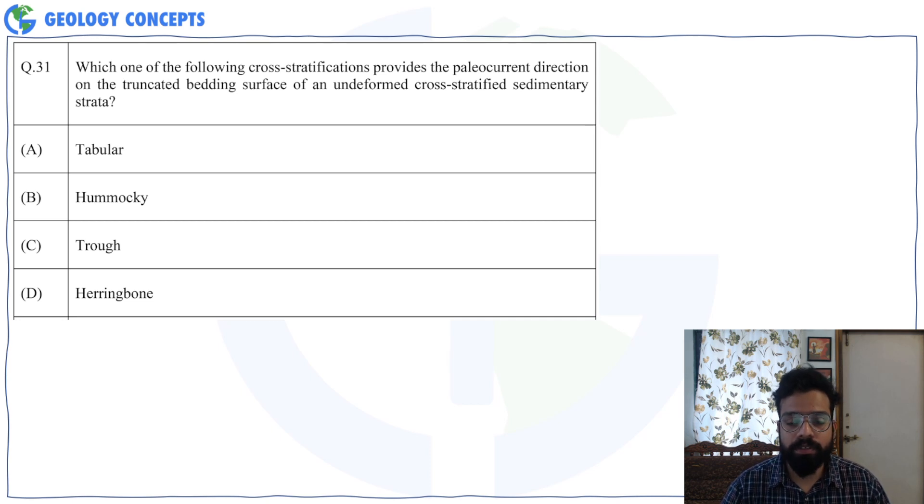Welcome back to Geology Concepts. In this video we will be solving question number 31 from Geology GATE 2022 exam. So the question reads, which one of the following cross stratifications provides the paleocurrent direction on the truncated bedding surface of an undeformed cross-stratified sedimentary strata?